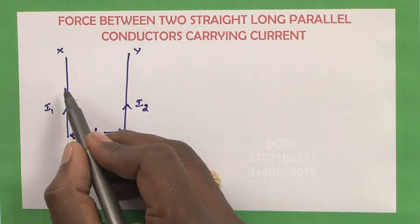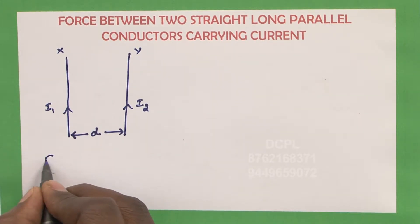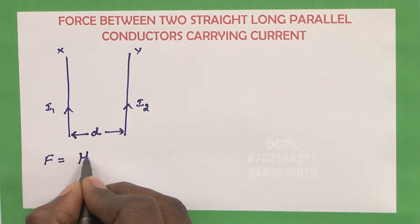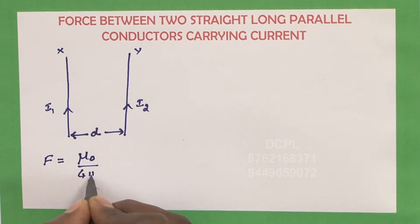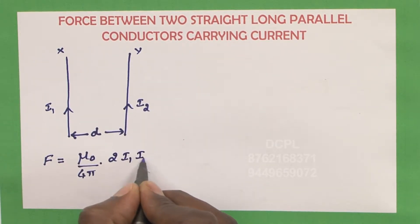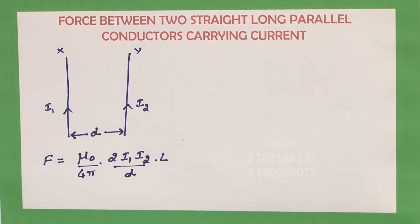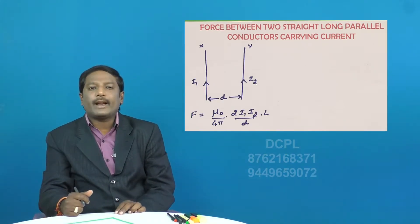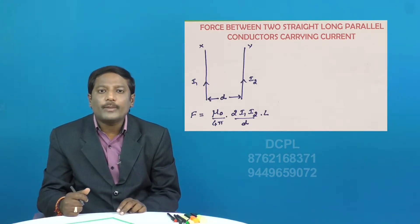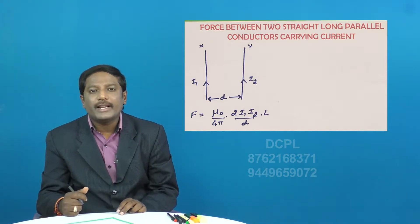The force experienced by each conductor due to the other conductor is given by the formula F equals mu naught by 4 pi into 2 times the product of the currents I1 and I2, divided by the distance D, into L, where L represents the length of the conductor.